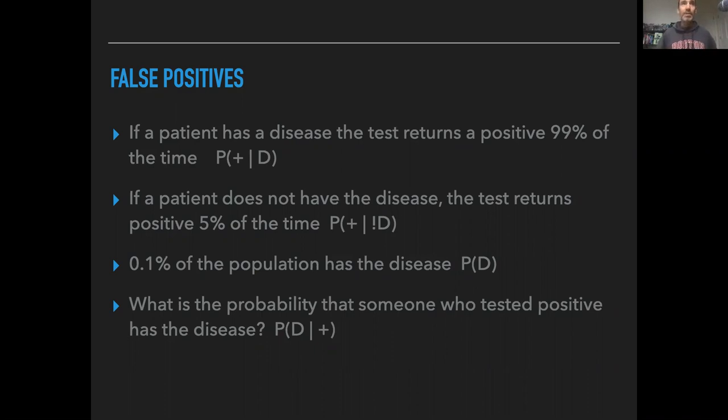I'm going to start by thinking about a simple case, kind of a medical false positives rate case, where I'm going to think about the components of Bayes' theorem in terms of specific probabilities, so specific individual numbers.